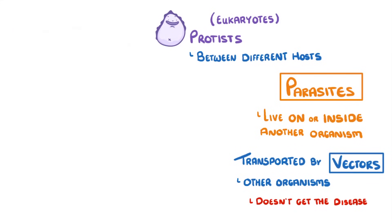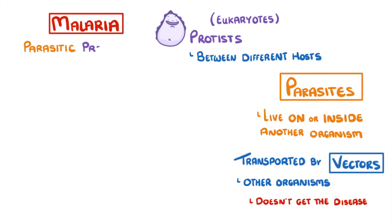To show you what we mean, let's consider malaria. Malaria is caused by a parasitic protist, which means that it needs a host such as a human or other animal to survive.